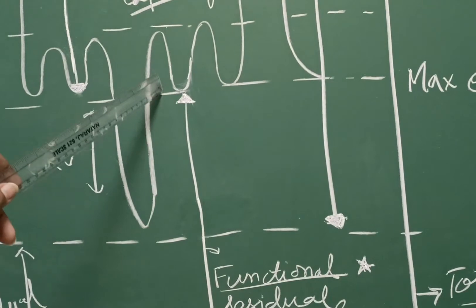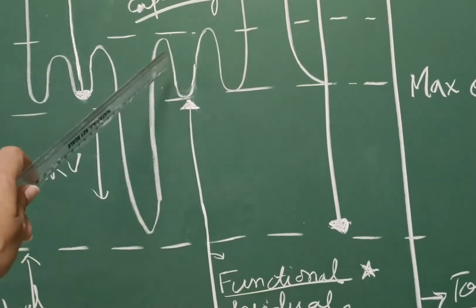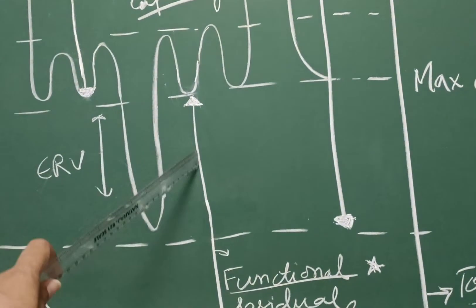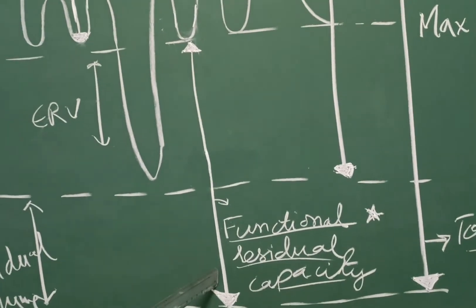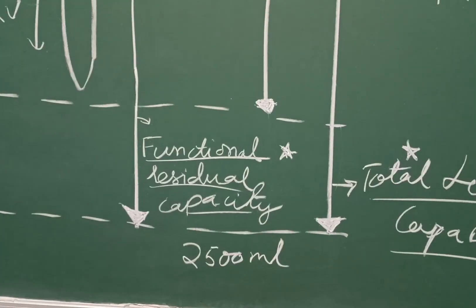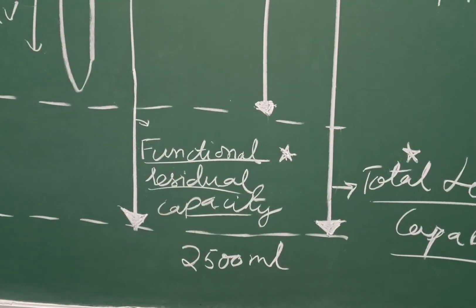Functional residual capacity is the volume of the air which is contained in the lungs at the end-expiratory position. It is a combination of residual volume and expiratory reserve volume which is around 2500 ml.